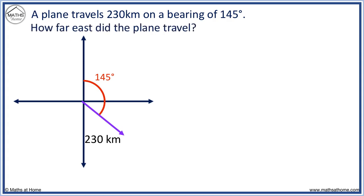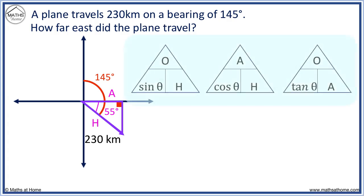How far east did the plane travel? We make a right-angled triangle. If this is 145 degrees, this must be 55 degrees as we subtract 90 degrees. The distance east is our adjacent, and 230 is our hypotenuse. We have A and H, so we use this triangle.